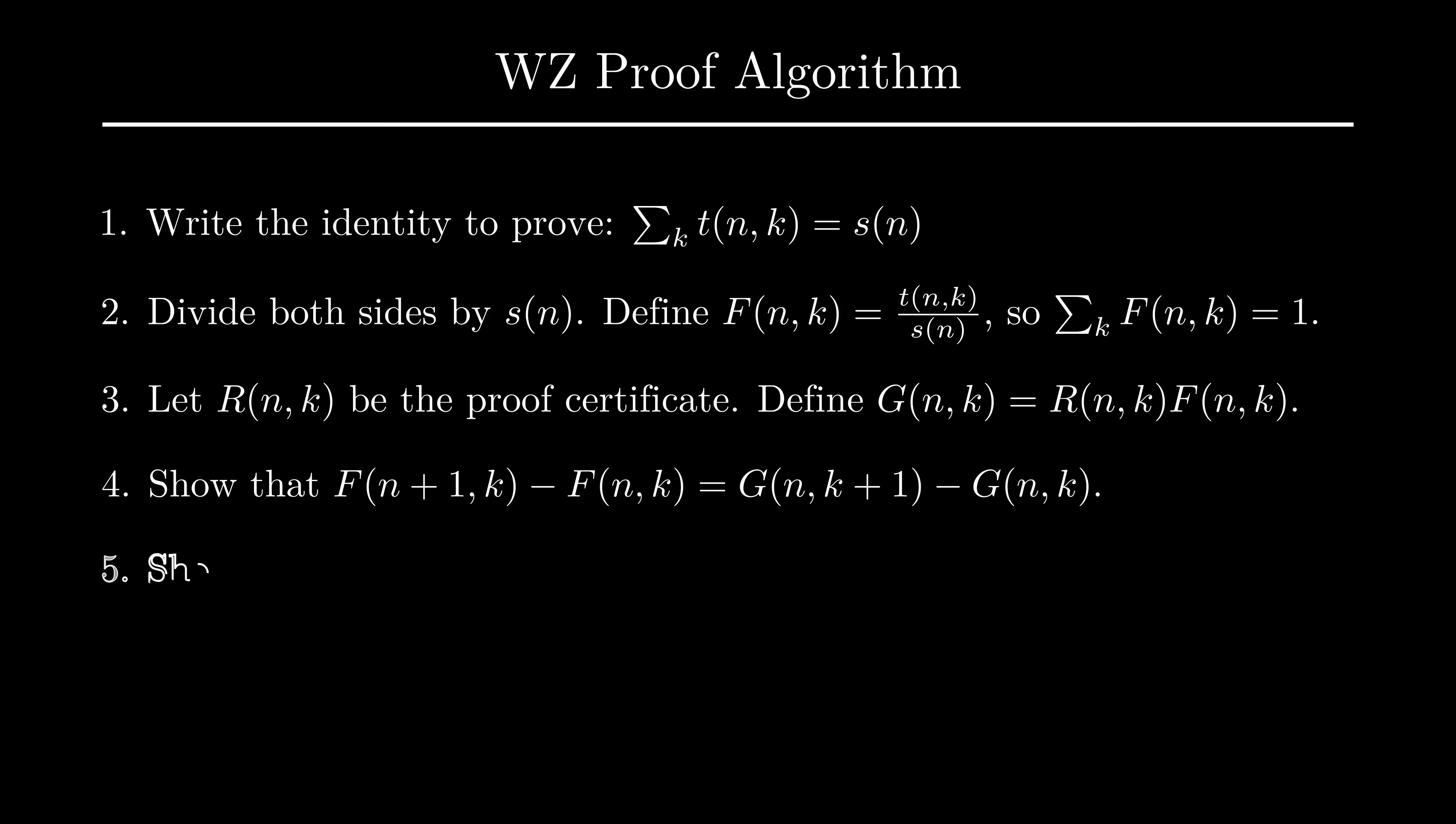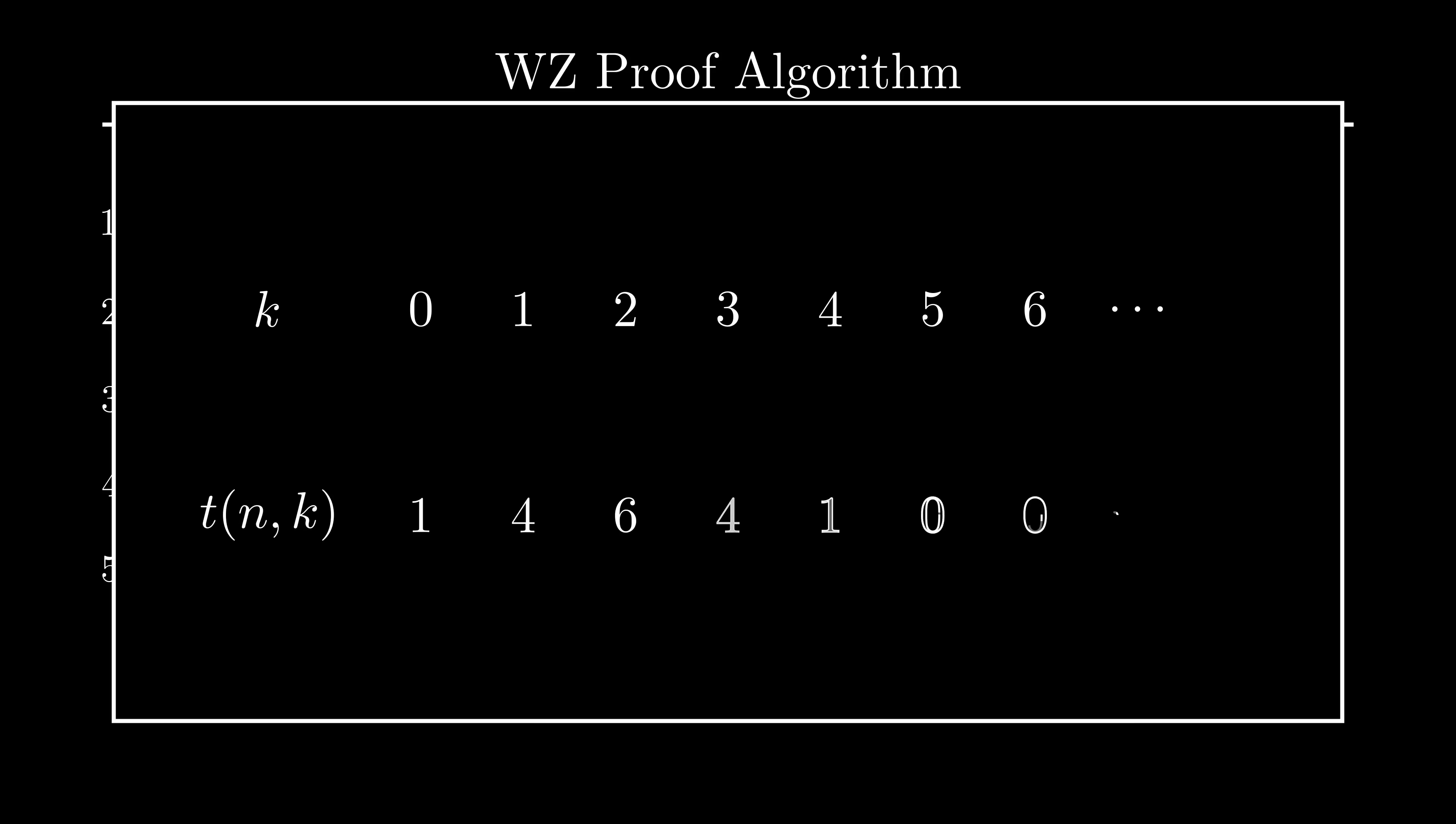Now that we have an idea of how telescoping works, we can now explain how the proof certificates work. Basically, there's a standard template of steps for the proof. All you have to do is plug in the rational function r and the proof is done. Here are the steps to the proof. First, let's suppose that we are trying to find a proof that the sum of all t over k is equal to some closed form s. For now, let's also assume that we are summing a finite number of terms, that beyond some value for k, all of the terms are zero. This will be an important detail later on.